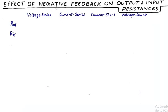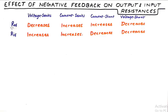When we talk about the effect of negative feedback, I've written down all four configurations possible: voltage series, current series, current shunt, and voltage shunt. You need to be very conversant with this table at all times. In voltage series, output resistance decreases and input resistance increases. In current series, both increase. In current shunt, output resistance decreases. In voltage shunt, both decrease.